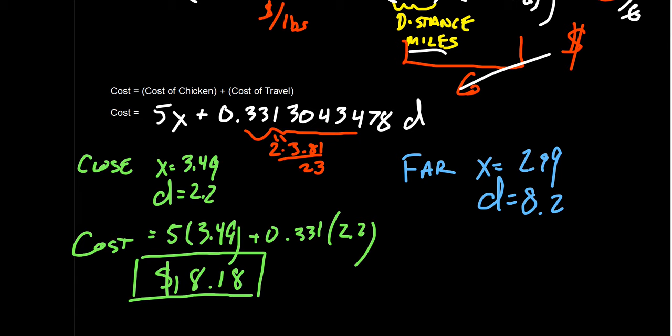If we do the cost of going to the farther away store, we're going to get five times 2.99. That's where the savings will be made. But then we have to do 0.331 times 8.2. That one's a farther away store. So the cost might be higher to travel there. So let's take a look at that. If we plug in the numbers, you'll excuse me for one second. As I do that, we get the following again, rounding this to two decimal places, you're going to get $17.67.